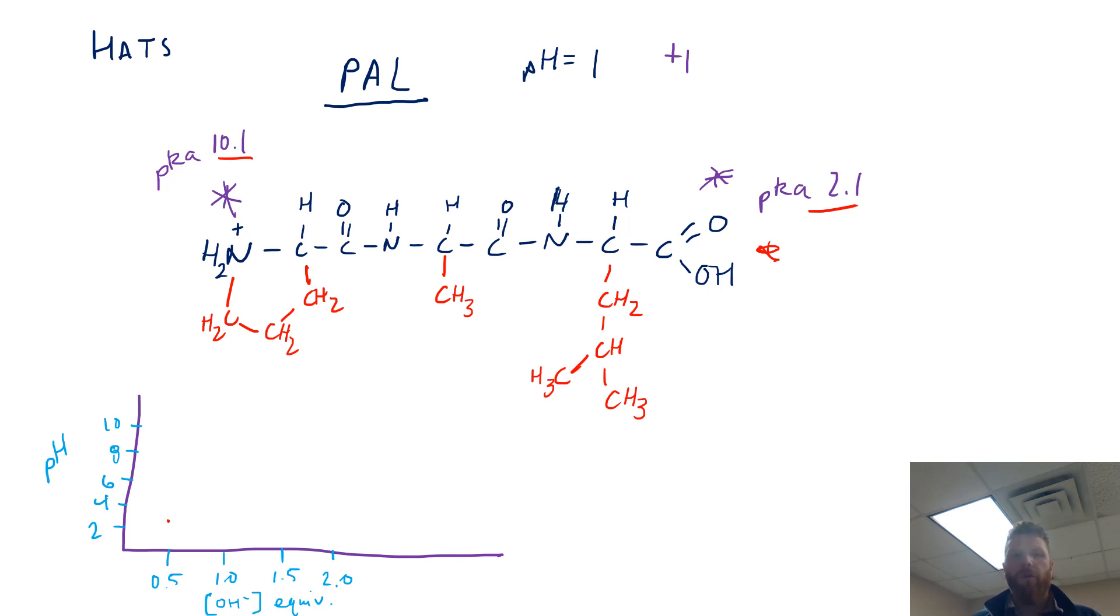So what we have here are two points that we need to be concerned with, that 2.1 and the 10.1. The 2.1 is going to align with the 0.5 mark because that represents 50% of this C termini is protonated and 50% is deprotonated. Next is 1.5. That's going to be our next pKa value, showing that 50% of the N termini is protonated, 50% of the N termini is deprotonated. So all that we need to do is just draw a titration curve that looks like such. There we go, and we're done-zo.